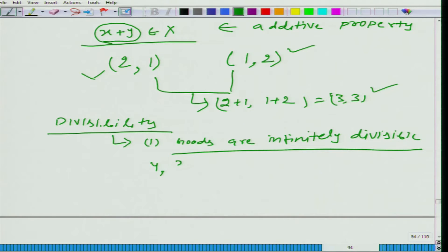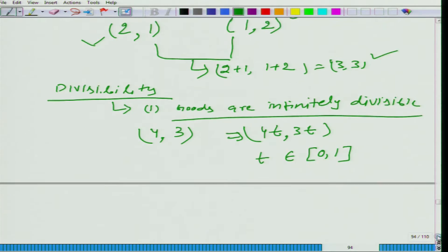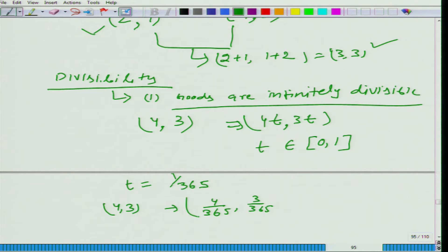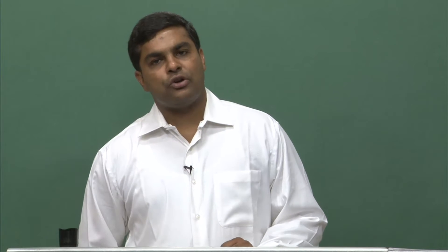Let us say we have a bundle (4, 3), meaning 4 units of food and 3 units of cloth. If we are able to conceive this, then we should also be able to conceive (4t, 3t), where t is a number between 0 and 1. For example, taking t = 1/365, we should be able to conceive the bundle (4/365, 3/365). If 4 units of food and 3 units of cloth is conceivable, then 4 divided by 365 and 3 divided by 365 is also a conceivable bundle.